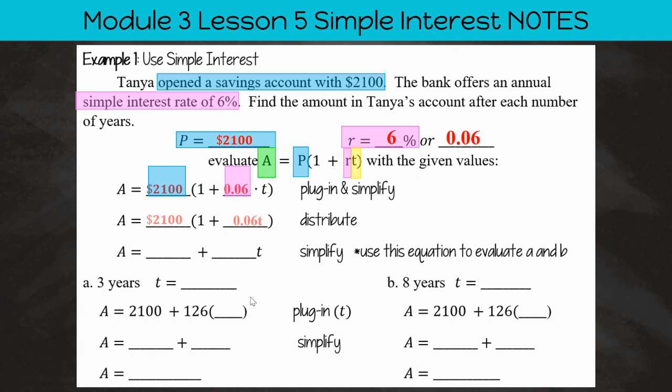Now we need to simplify that. So that's just going to be A is equal to 2100 multiplied by 1 plus 0.06 T. And then we need to distribute that 2100 to the two terms in the parentheses. So 2100 times 1 is 2100. 2100 times 0.06 T is 126 T.